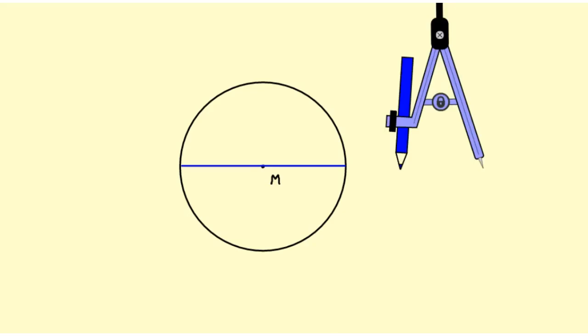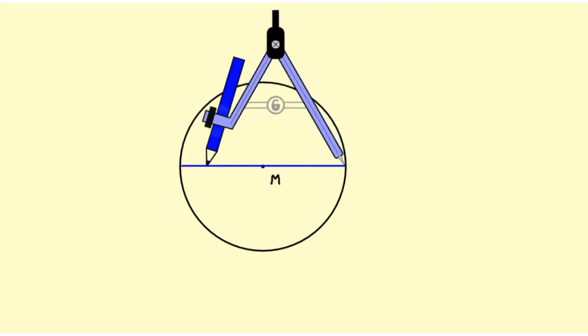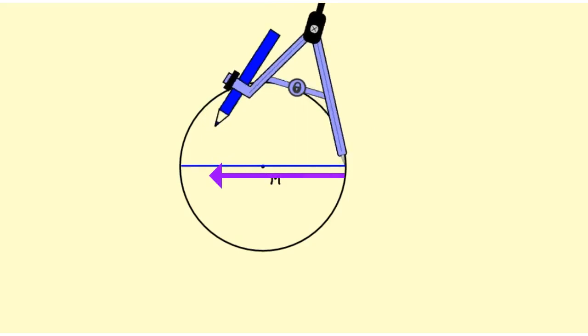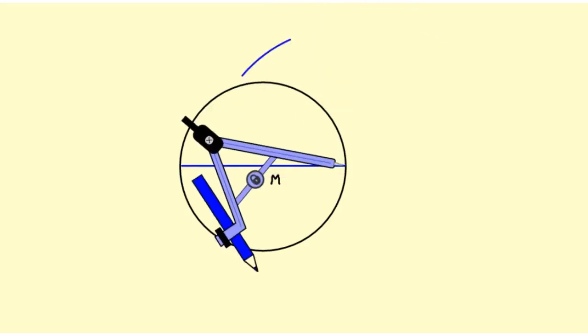When we construct a perpendicular bisector, we put the point of the compass on each end of the segment and make sure our compass is opened up more than halfway, then we draw arcs above and below from each endpoint.